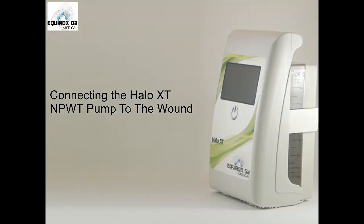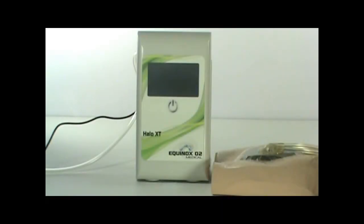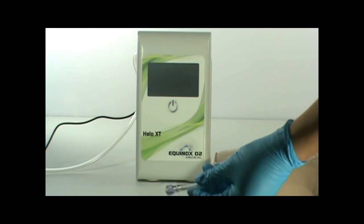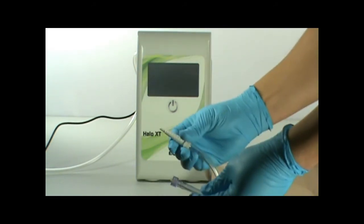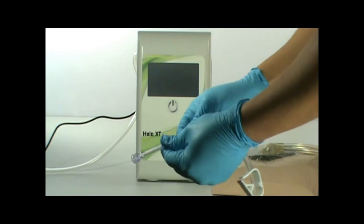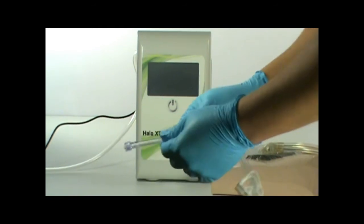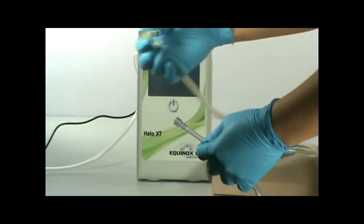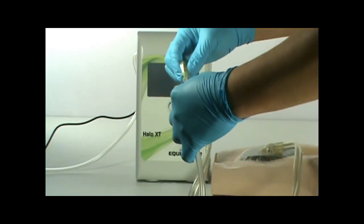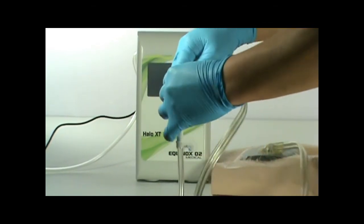Connecting the Halo XT NPWT pump to the wound: First, grab your universal adapter. Connect the universal adapter to your canister tubing. Connect the adapter to the dome pad tubing like so, twist and secure.